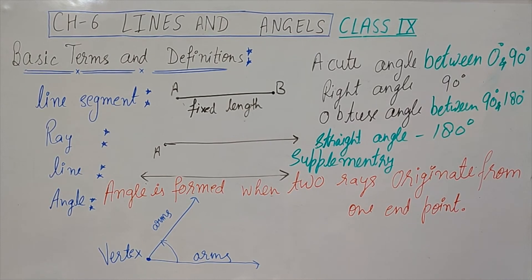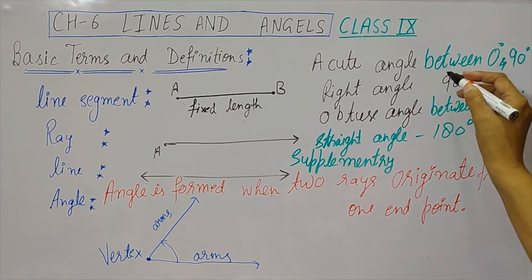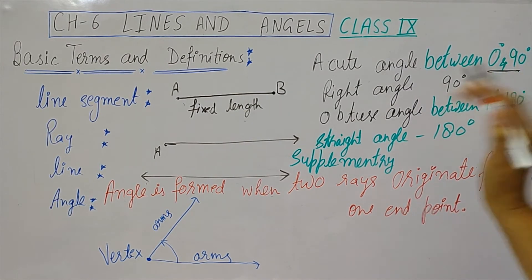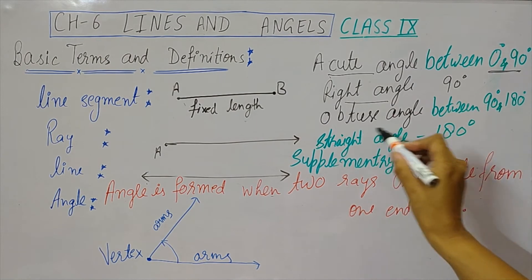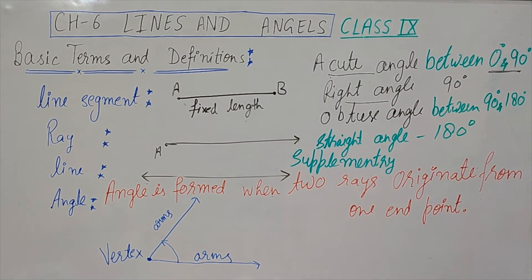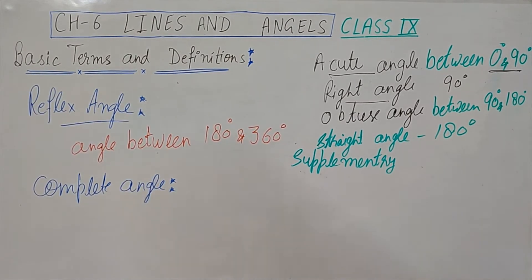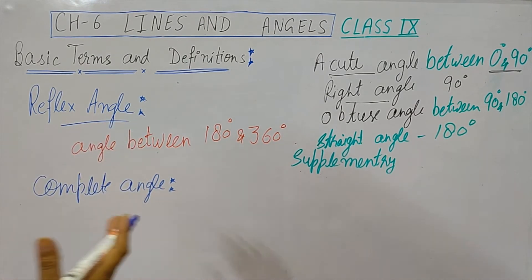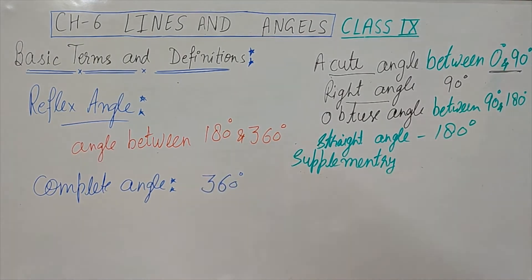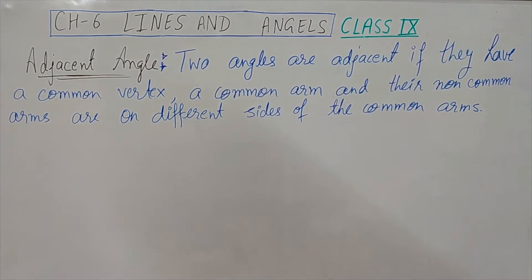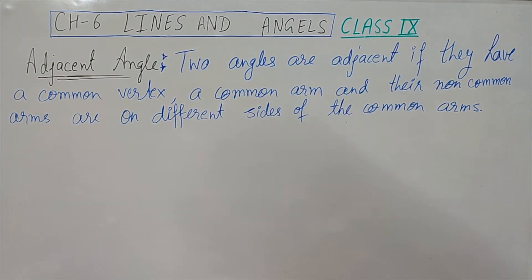On the basis of measurement, angles are divided into different categories. An angle between 0° and 90° is an acute angle. Exactly 90° is a right angle. Between 90° and 180° is an obtuse angle. Exactly 180° is a straight angle. The angle between 180° and 360° is a reflex angle, and exactly 360° is called a complete angle.